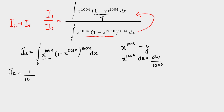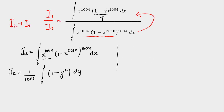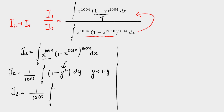So i2 becomes 1 over 1005 times an integral. The limits don't change — putting 0 gives 0 and putting 1 gives 1 — and we get (1 minus y squared) to the power 1004 dy. Now I apply King's rule, replacing y by (upper limit + lower limit − y), that is replacing y with (1 minus y). The limits remain intact and the integral value doesn't change. We get 1 minus (1 minus y) squared to the power 1004 dy, which simplifies: the 1's cancel giving (2y minus y squared) to the power 1004.